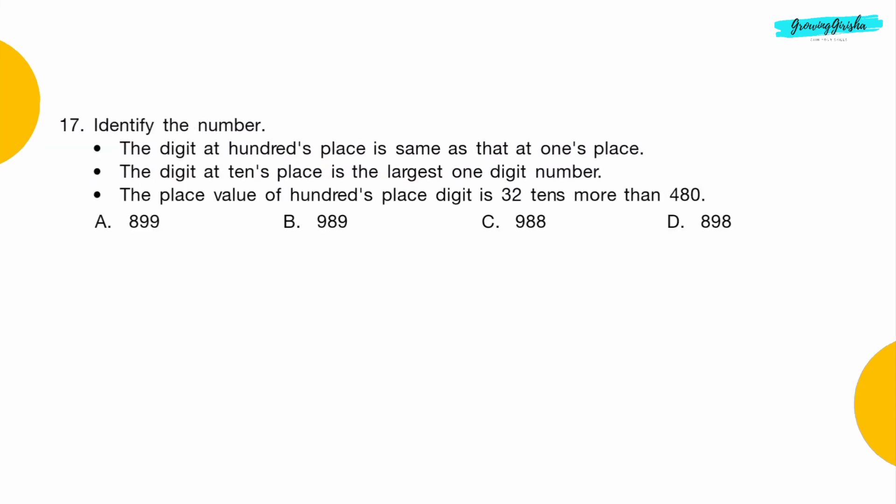Question 17: Identify the number. The digit at hundreds place is same as that at ones place. The digit at tens place is the largest one digit number. The place value of hundreds place digit is 32 tenths more than 480. Option D: 898.